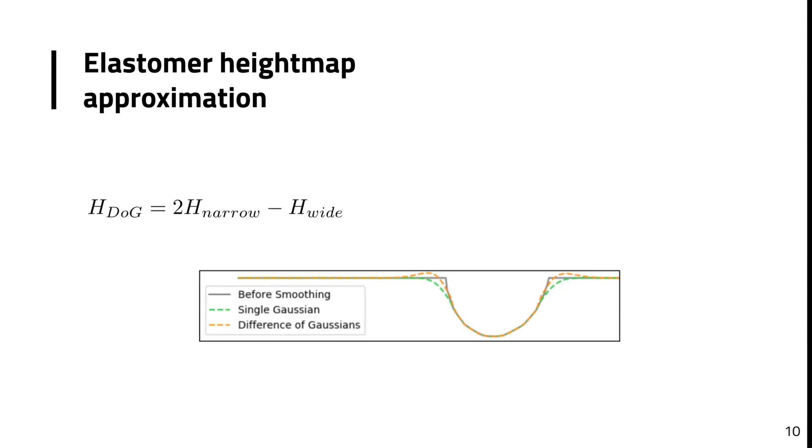To mimic the bump contouring around the in-contact region that is observed in the real elastomer, a final height map, hdog, is computed, where h narrow is a height map approximation computed with a smaller sigma than the one used in h-wide. The results of using a single Gaussian filter versus the difference of Gaussian filters can be seen in this plot. Here, in orange, the difference of Gaussians better captures the observed bump.